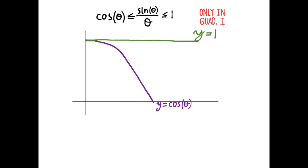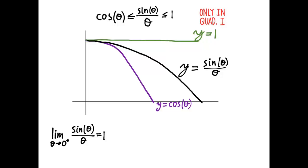So since we know the limit as cosine theta approaches 0 from the right is 1, and we know the limit as 1 approaches 0 from the right is 1, all three of these functions must have a limiting value of 1 as theta approaches 0 from the right. And therefore, the limit as theta approaches 0 from the right of sine theta over theta is equal to 1. In fact, you can use similar reasoning on the other side of 0, and the two-sided limit is also equal to 1.